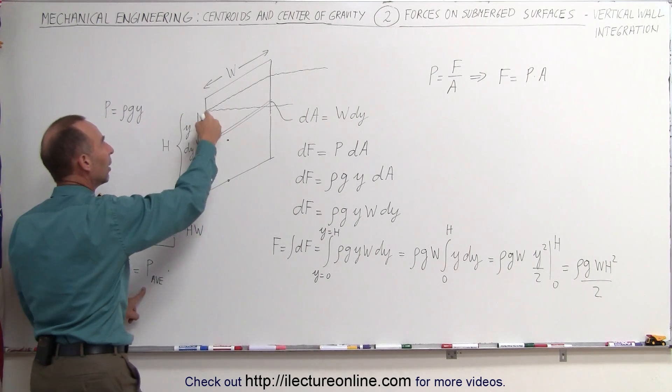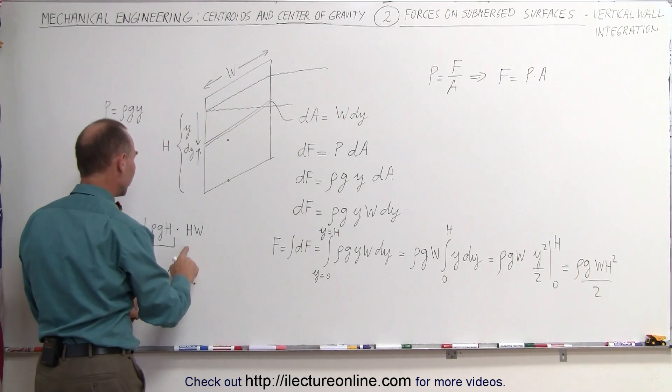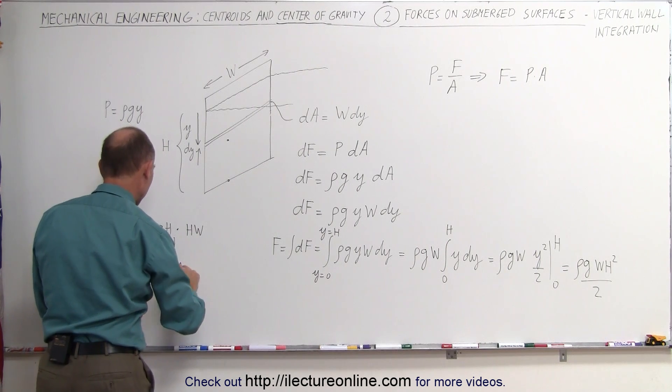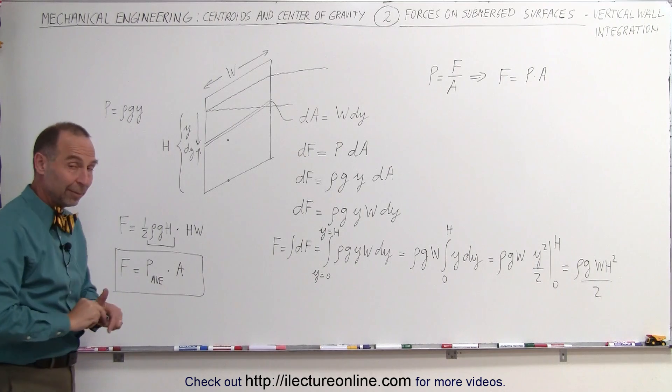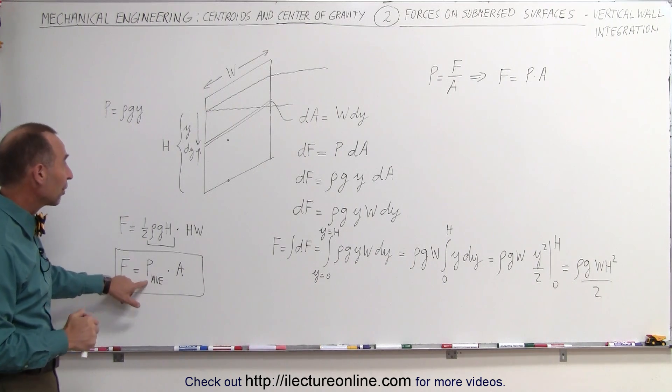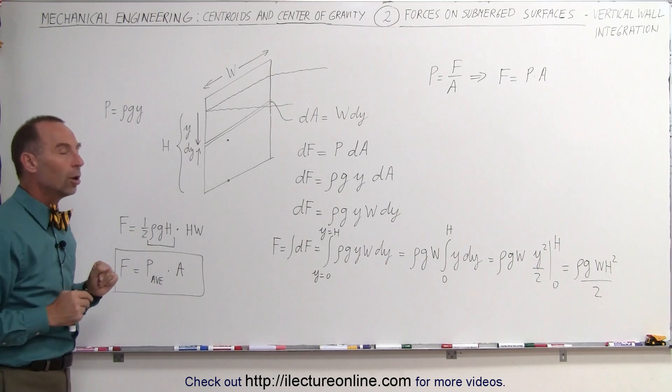Now h is the depth of the pool, w is the width of the wall, so therefore h times w is equal to the area, and this becomes the force on a vertical wall. We can simply say that it's equal to the average pressure at the halfway point times the area of the wall.